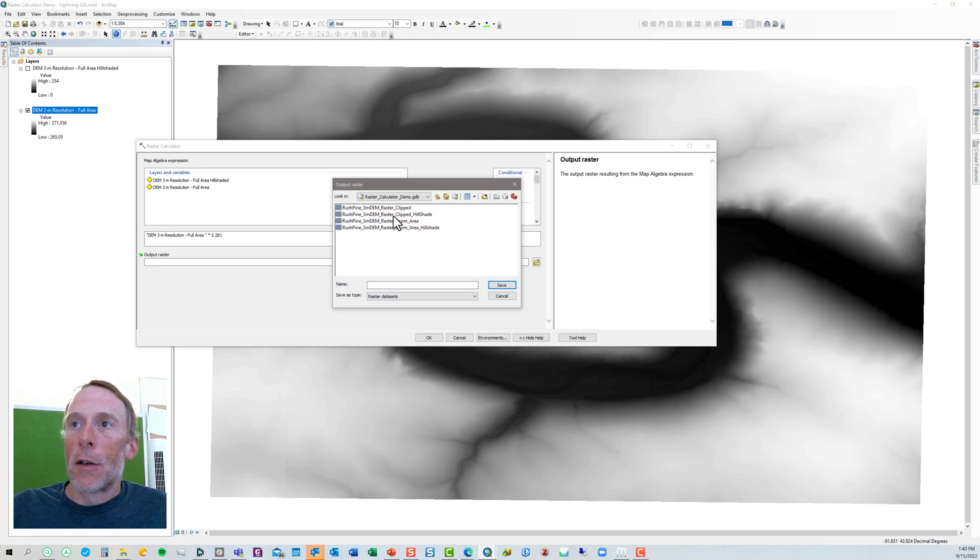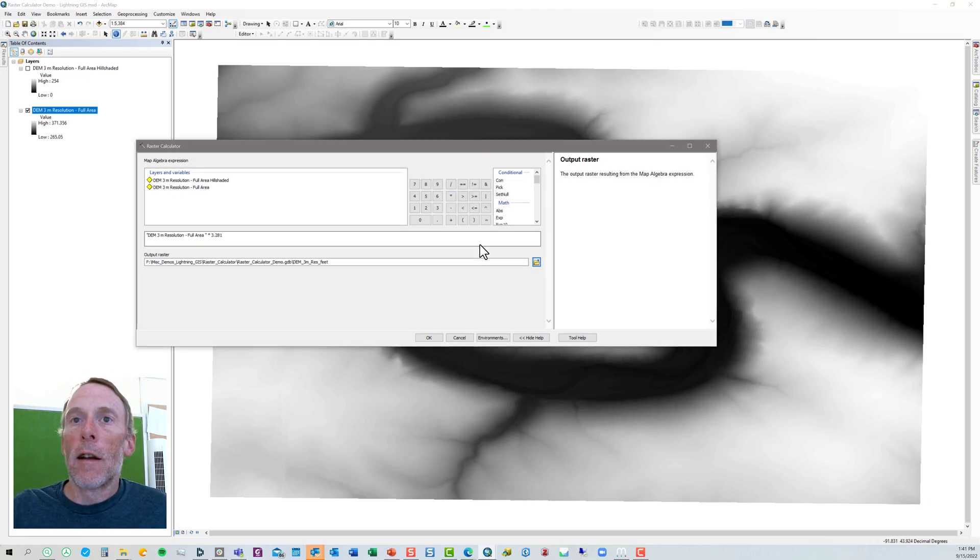So we have to, because we don't overwrite the original raster calculator, we need to come up with a name for this. So I'll just call it DEM three meter resolution feet to tell me the vertical units are in feet.